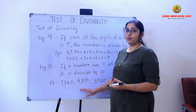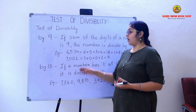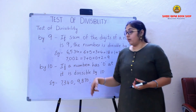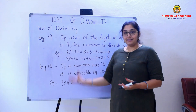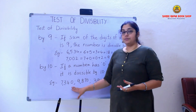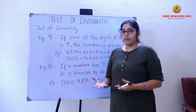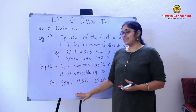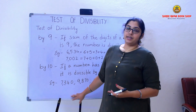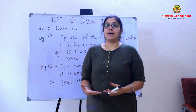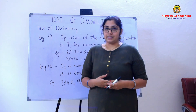This is how you use the test of divisibility from 1 up to 10, where we can determine divisibility just by observing the last digits, adding the digits, or simply observing the number. There is an exercise in your textbook where you can practice the test of divisibility, and please go through the divisibility rules from your textbook as well. Thank you.